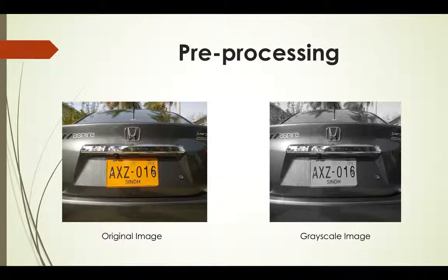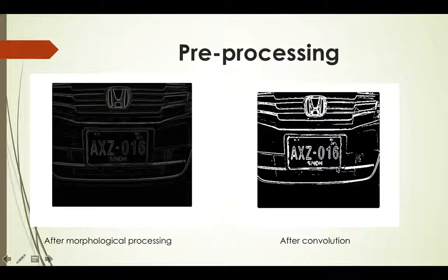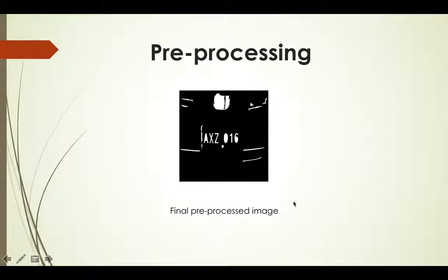This is an example using the program that I wrote. We have the original image and the one on the right is converted into grayscale. This grayscale image has been subjected to morphological processing and at the end it is convolved. So the final pre-processed image looks something like this—we remove all the unwanted objects and try to highlight only the characters.